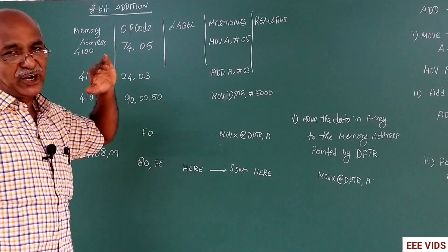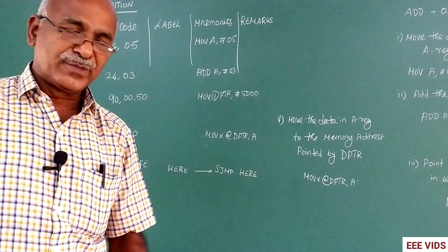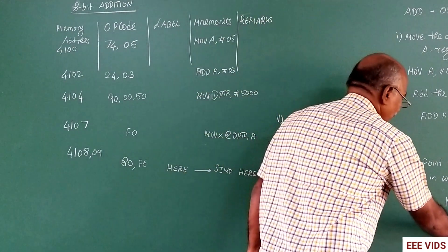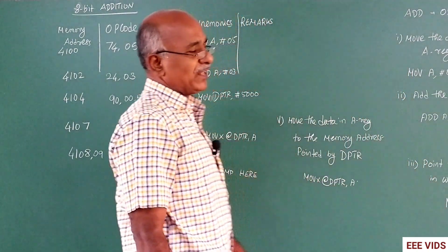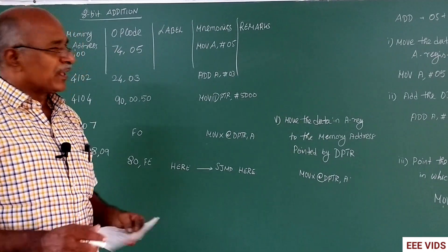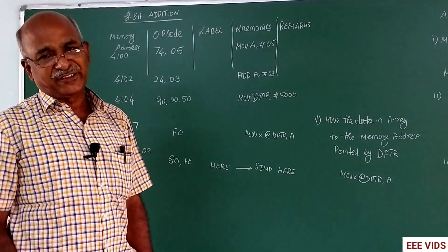How to perform the addition. We use MOV DPTR, MOV X@DPTR, 5000, that is the result pointer. This program we can use for division and subtraction.